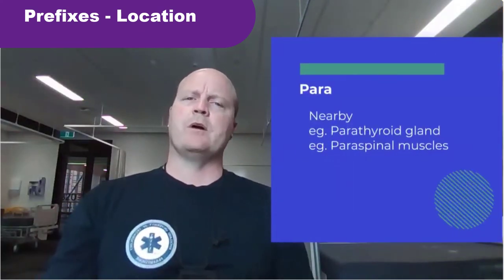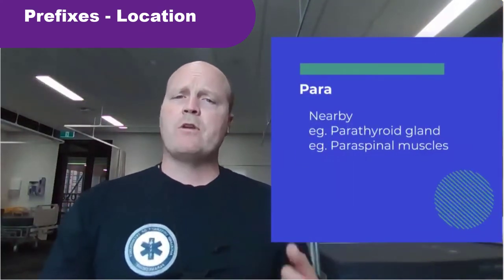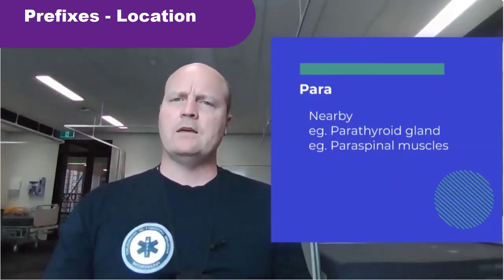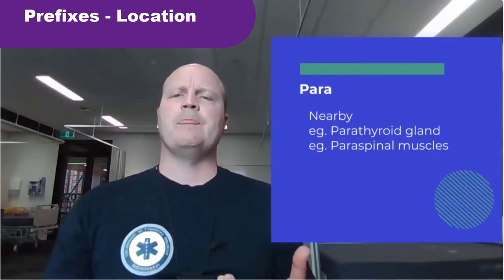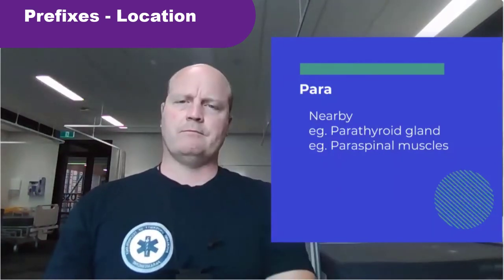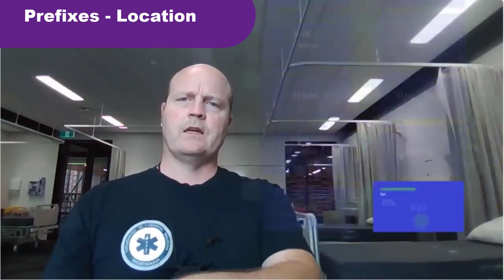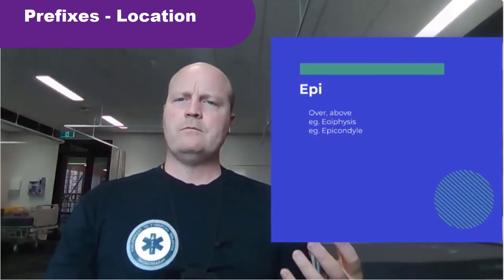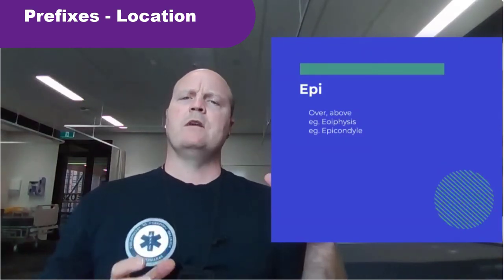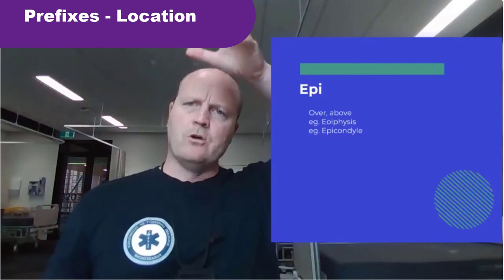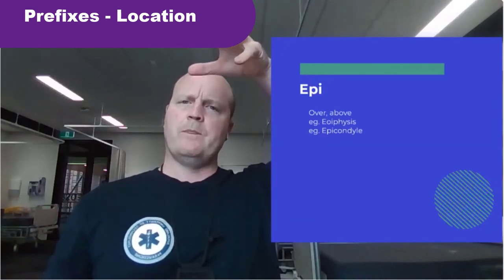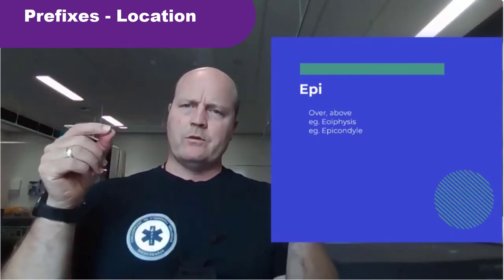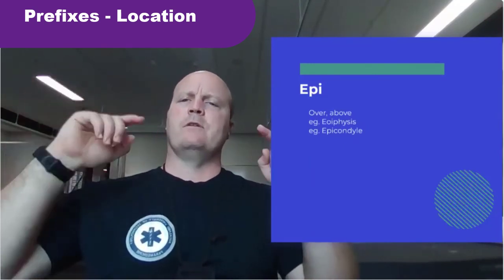Pari means nearby. So the parathyroid gland is next to or near the thyroid gland, and our paraspinal muscles are beside our spine. Then lucky last, epi means over and above. So on a long bone, our epiphysis is the bone end, which is over and above the top of the bone. And our epicondyle is a little bump on a bone that's over and above the condyle.